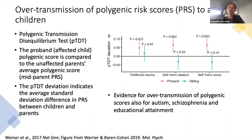Weiner et al. previously reported evidence of over-transmission of PRS for autism, schizophrenia, and higher educational attainment to autistic children, but not to their unaffected siblings. The findings suggest that these genetic correlations are not explained by population stratification or ascertainment related to familial factors.